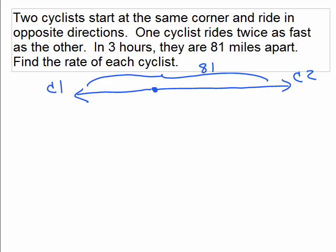This was the first problem we looked at. Two cyclists start at the same corner and ride in opposite directions. One cyclist rides twice as fast as the other. In three hours, they are 81 miles apart. Find the rate of each cyclist. So we decided this was the picture. They started from the same spot, went in opposite directions, and eventually they end up 81 miles apart from each other.